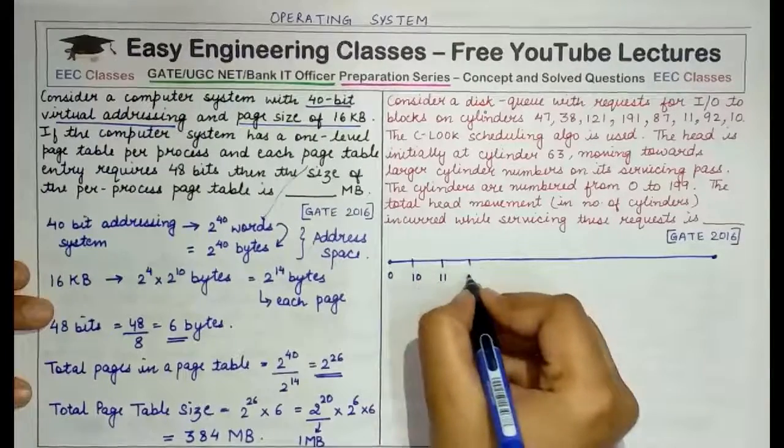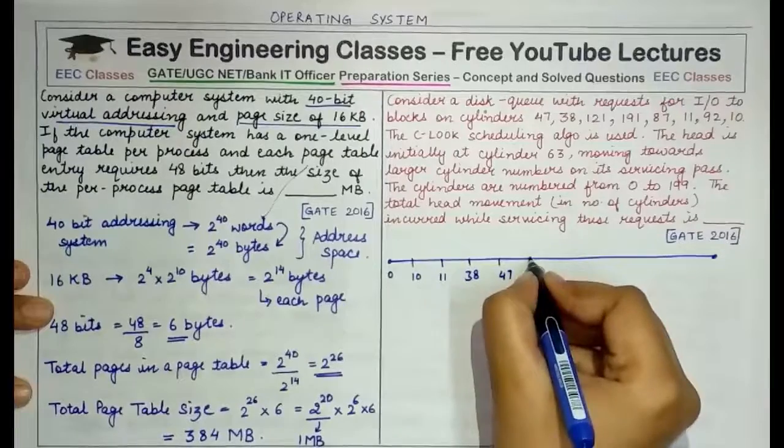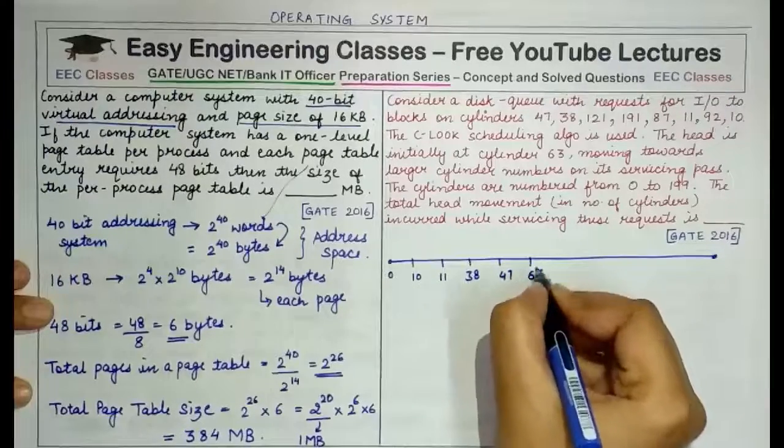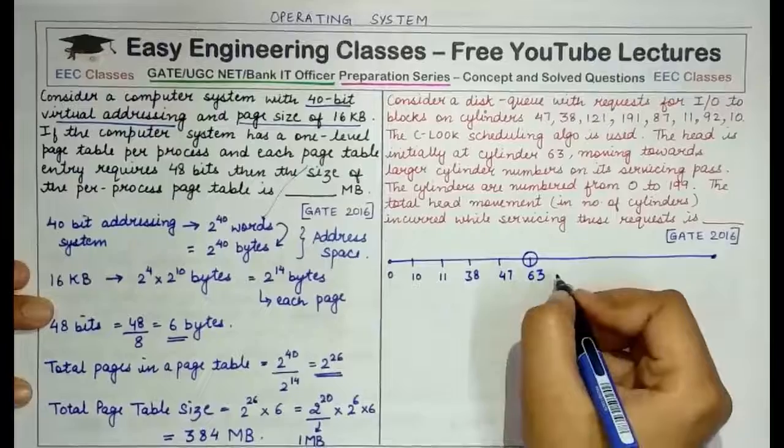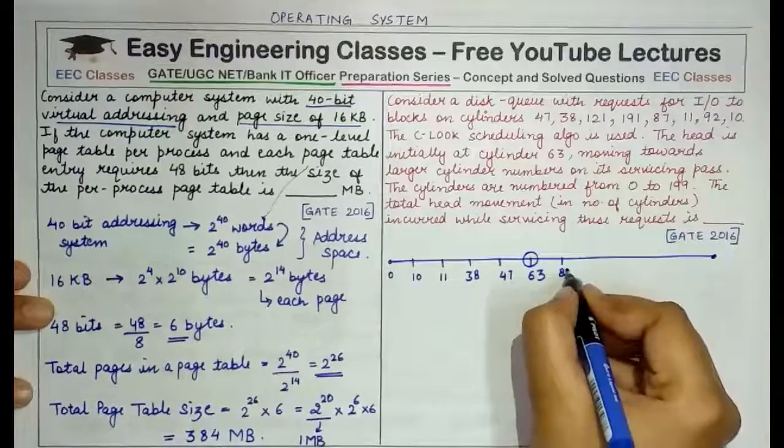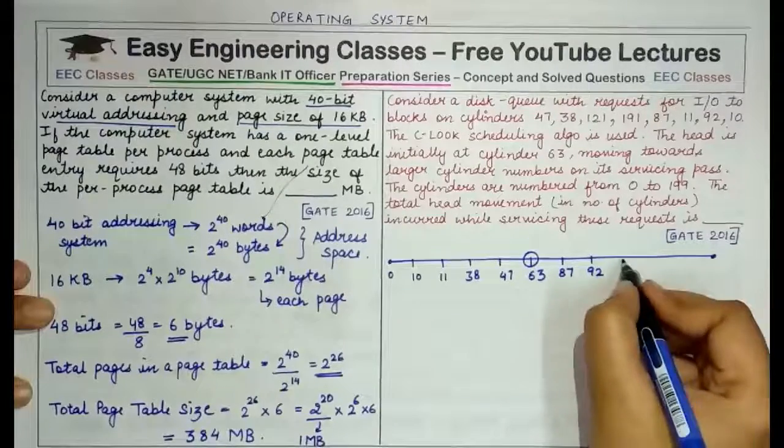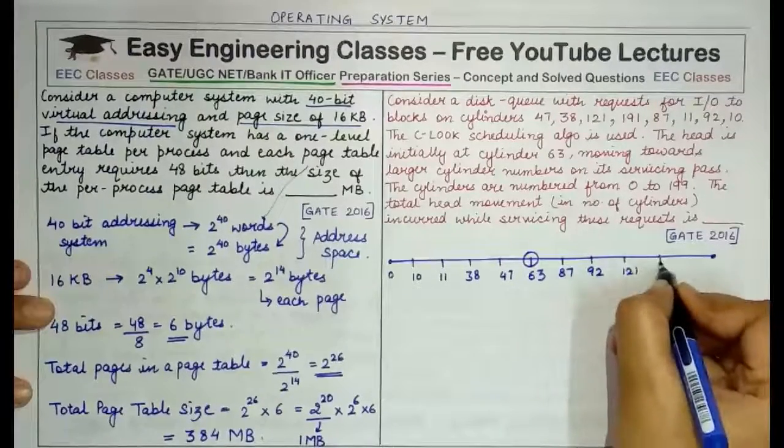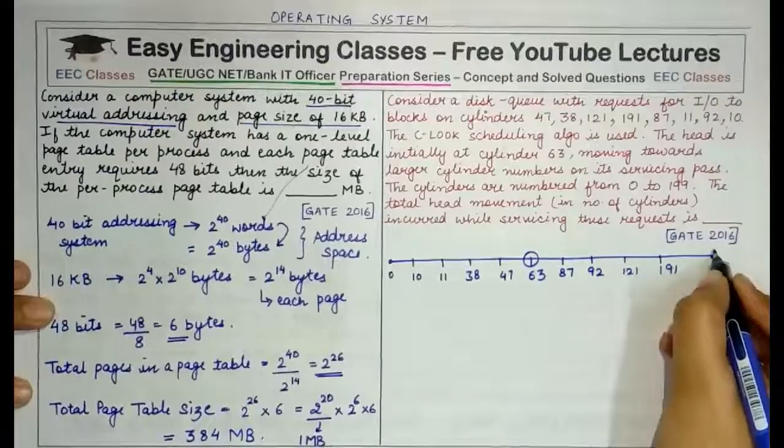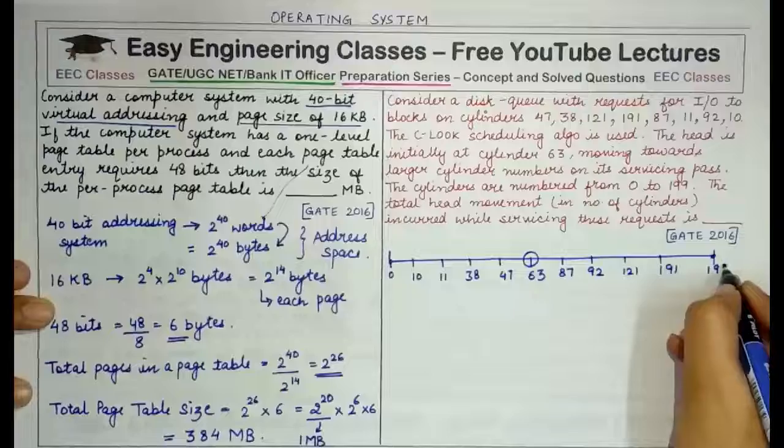Initially we are given a certain set of requests, IO requests and we have to service these requests using CLOOK scheduling algorithm. Let's draw how the head movement will occur through all these requests. We have a request at 10, since we have the timeline from 0 to 199, we will write down all the values. Then we have a request at 38, 47, 63. The head is currently placed here and it is moving towards 199, towards larger cylinder numbers. Then at 92, then at 121, 191 and the cylinders are numbered from 0 to 199.